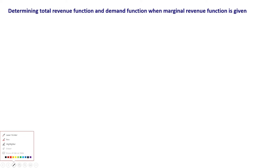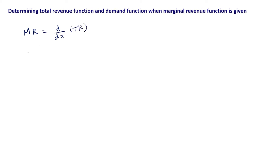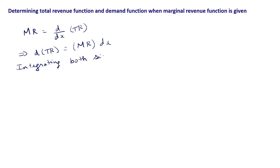We will see how to determine the total revenue function when the marginal revenue function is given. We know that marginal revenue is given by the derivative of total revenue. From this, the differential of total revenue is marginal revenue into dx. We can integrate both sides to get total revenue equal to the integral of marginal revenue dx plus the constant of integration k.